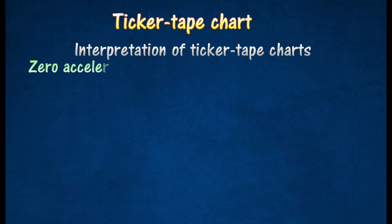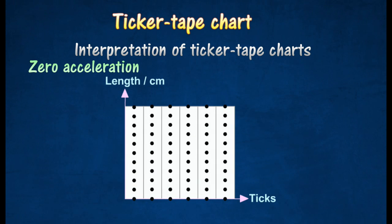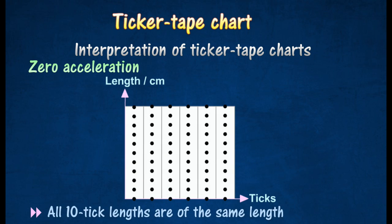The ticker tape chart shows all the 10-tick lengths are of the same length. This means motion with uniform velocity or zero acceleration.